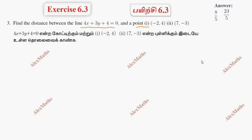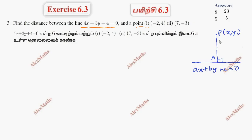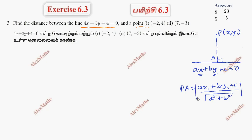We use a formula. One line equation: ax plus by plus c is equal to 0. Point P is equal to (x₁, y₁). To find the distance between the point and the line, we substitute into: distance = |ax₁ + by₁ + c| divided by the square root of a² plus b².